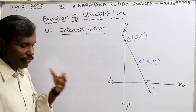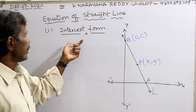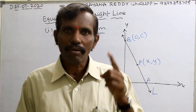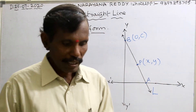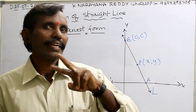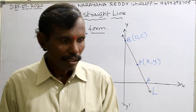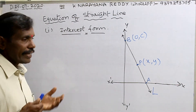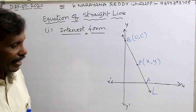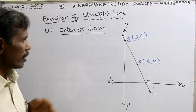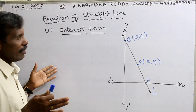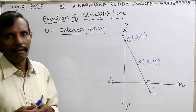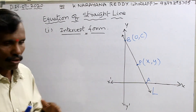The equation of a straight line has different forms. Number one is intercept form. Number two is containing one point and slope. And number three is containing two points. In these three cases, how to find the equation of a straight line — this is very important for any geometrical points.